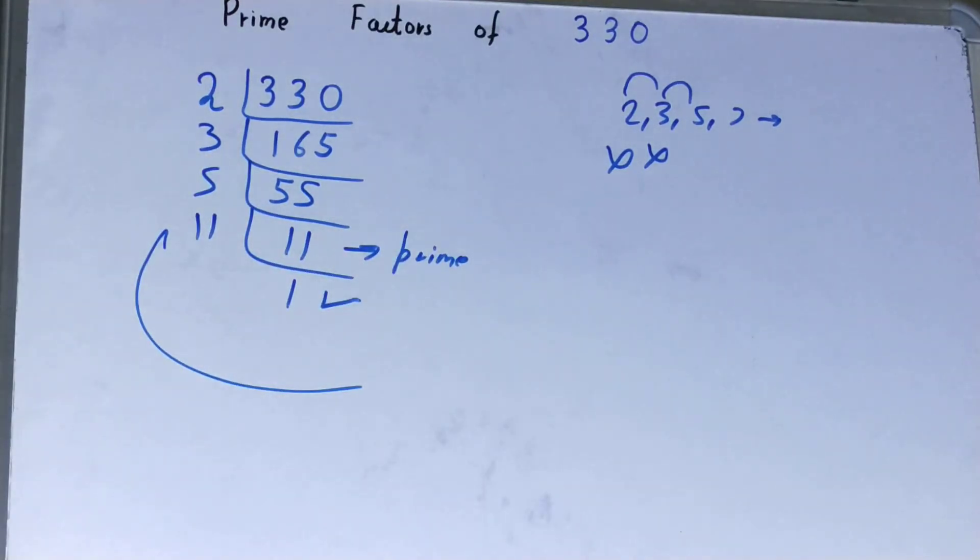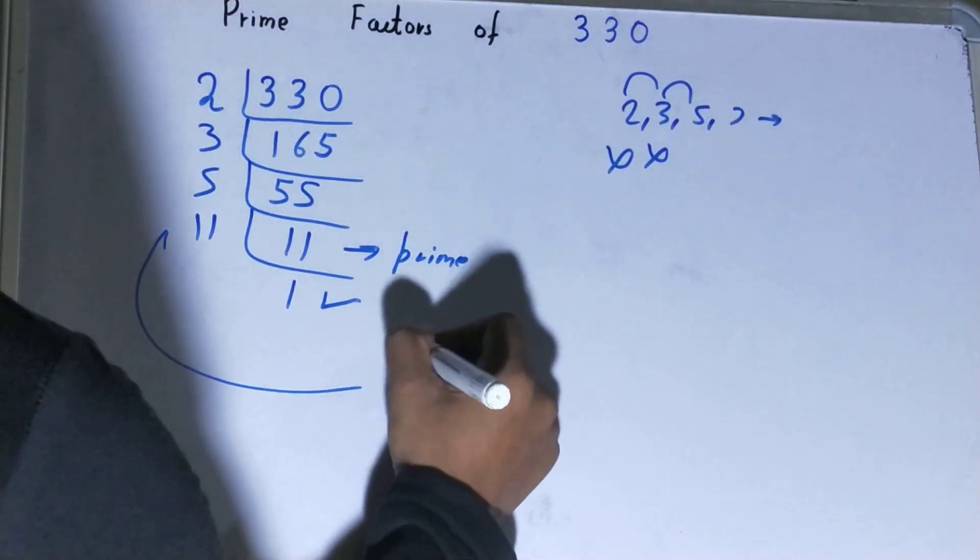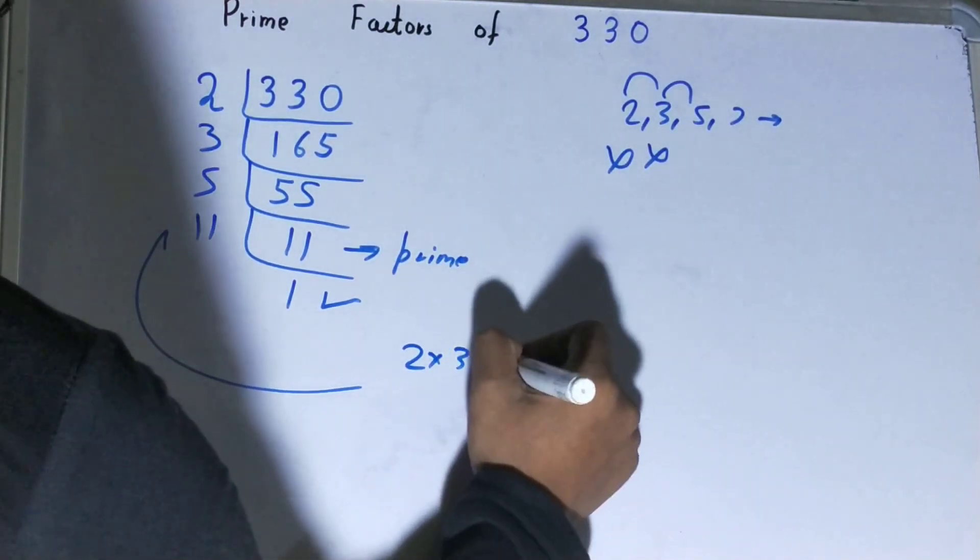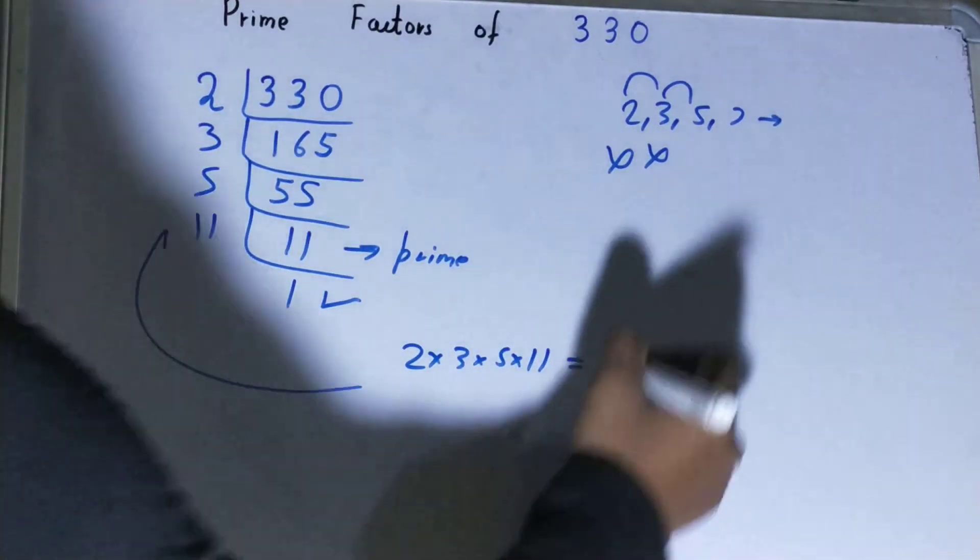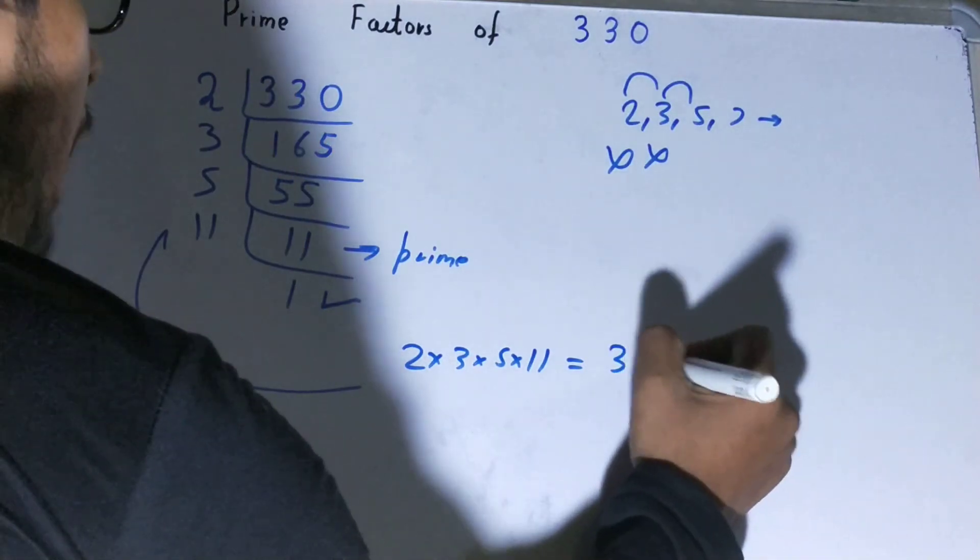That is 2 × 3 × 5 × 11. If you want to check whether it is right or not, you can multiply them. If on multiplying you have the number back again, that means your calculation is correct.